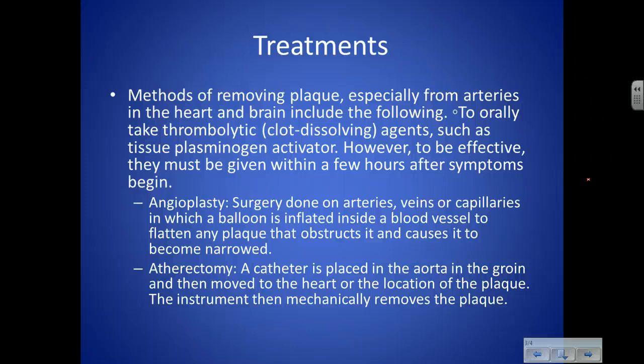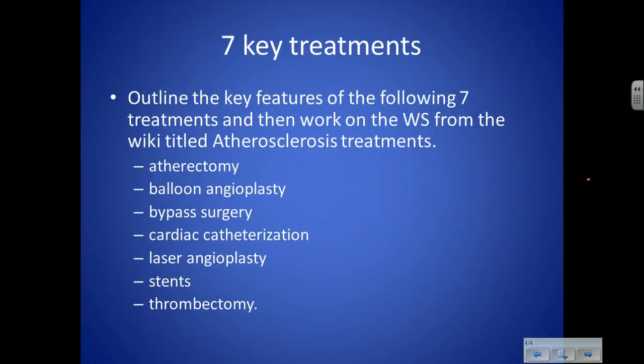You can also have angioplasty, which is a surgery done on arteries, veins, or capillaries. A balloon is inserted up the vein, inflated, and it simply flattens and pushes the plaque flat to make that area free again. You can also have an atherectomy, where a catheter — a tube — is placed into the aorta in the groin, then moves to the heart or wherever the plaque is, and mechanically cuts it out or pulls it out.